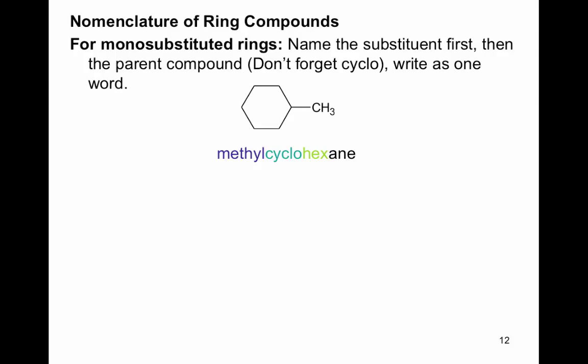Nomenclature of ring compounds: for monosubstituted rings — only one substituent on the ring — name the substituent first, then the parent compound. Don't forget the word cyclo, and write it as one word. You don't give the address of the substituent because it's understood to be on carbon number one. For example, methylcyclohexane: cyclo means carbons in a ring, hex means six carbons, and the -ane suffix means all single bonds.